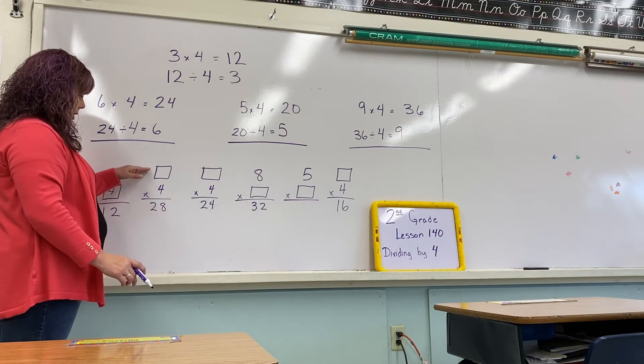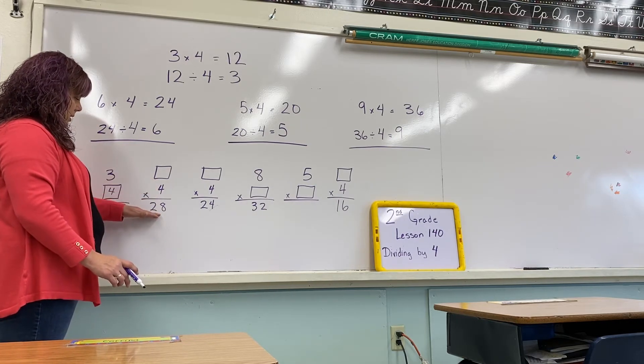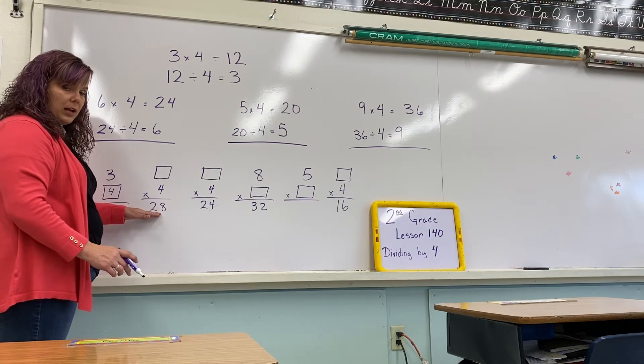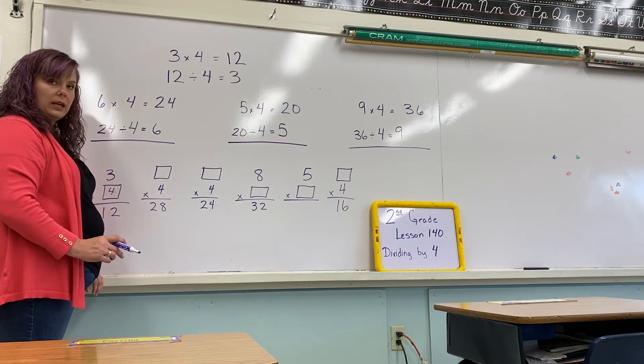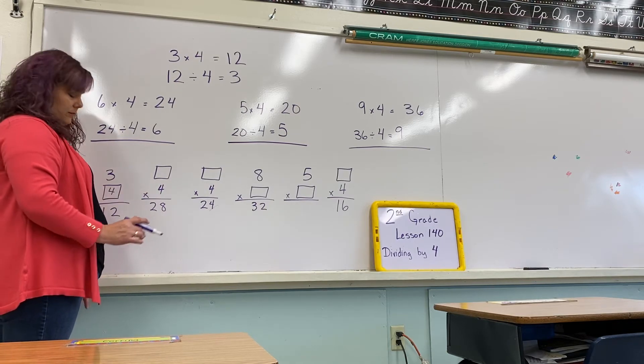Here we have what number times 4 equals 28. If you remember your 4's times table, you can do 28 divided by 4 is? Very good. 7.